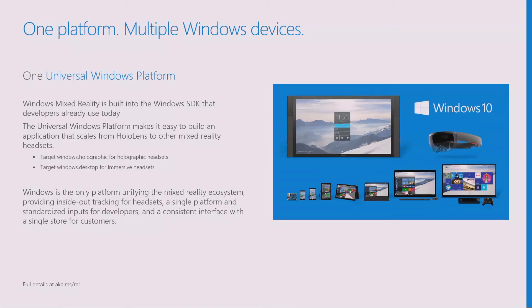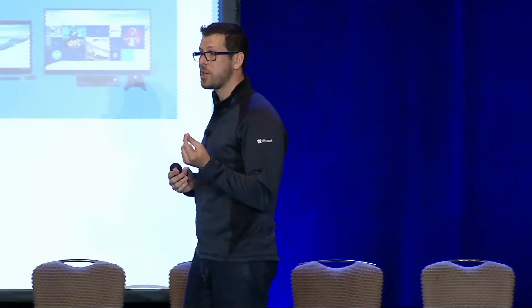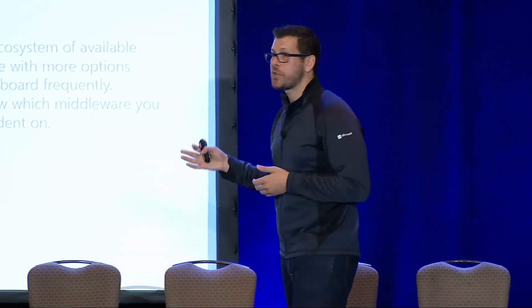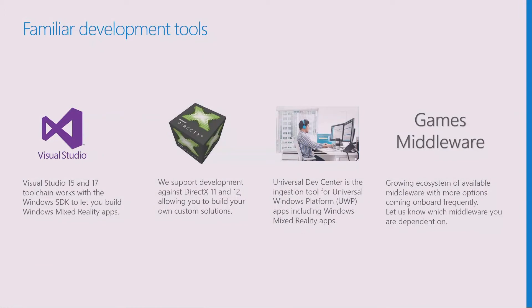When you build a single Universal Windows Platform application, you can target holographic headsets or PCs connected to an immersive headset. You can actually build one application — we showcased this at Build just this year — that checks which kind of device it's running on and targets a different experience, whether you're in an immersive headset or HoloLens. Familiar development tools: you'll use Visual Studio regardless of which device you're developing for, develop against DirectX if you want to bring your own engine, use our Dev Center for publishing through the Windows Store. We've partnered with Unity to great success on HoloLens, and they've announced support for Windows Mixed Reality immersive headsets as well.